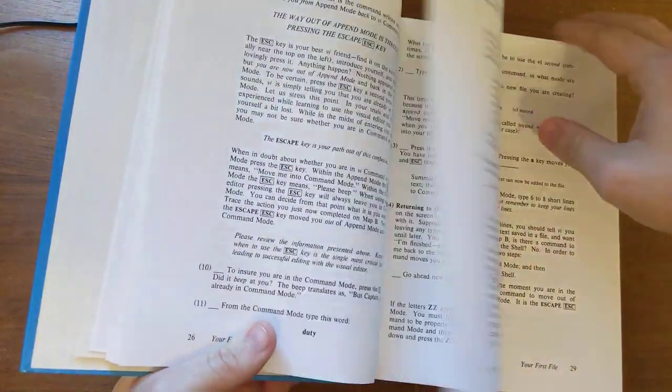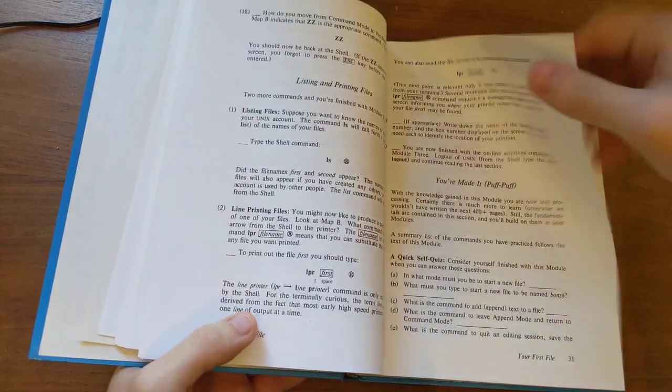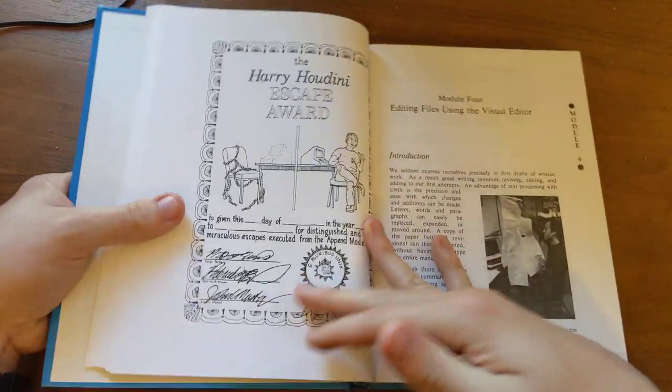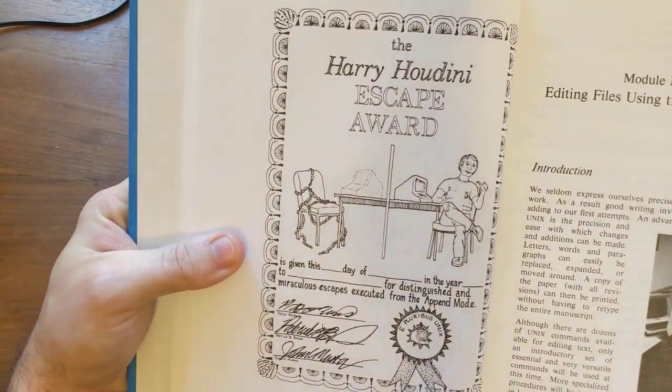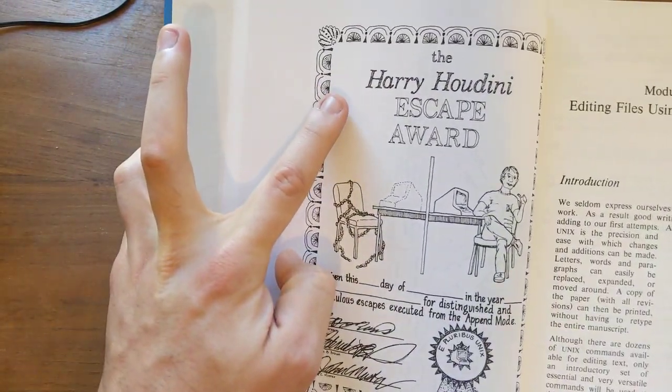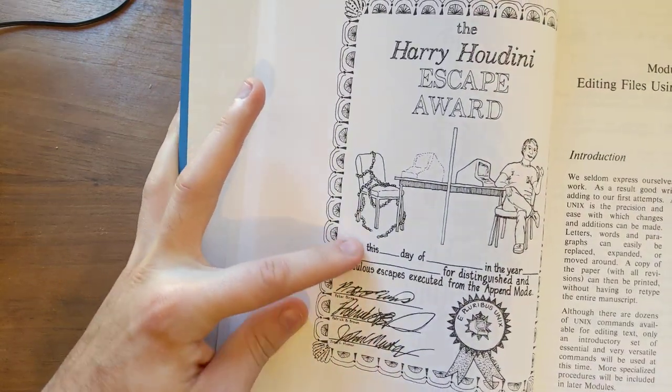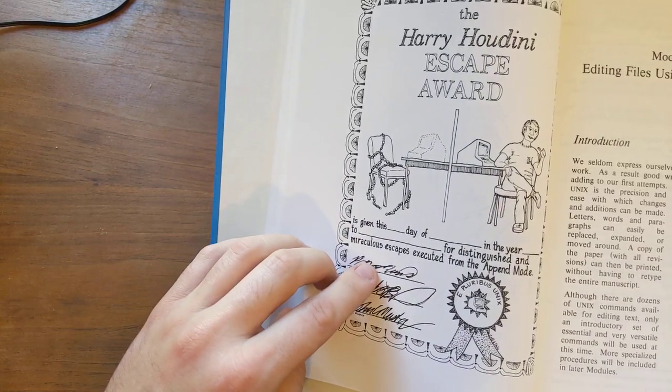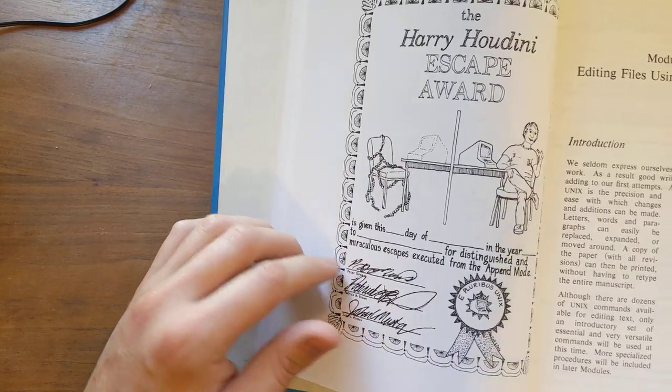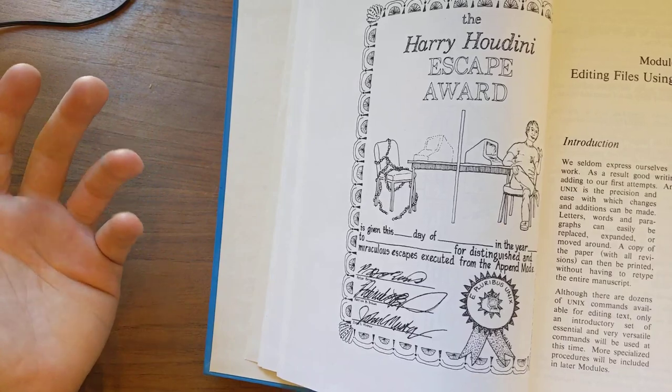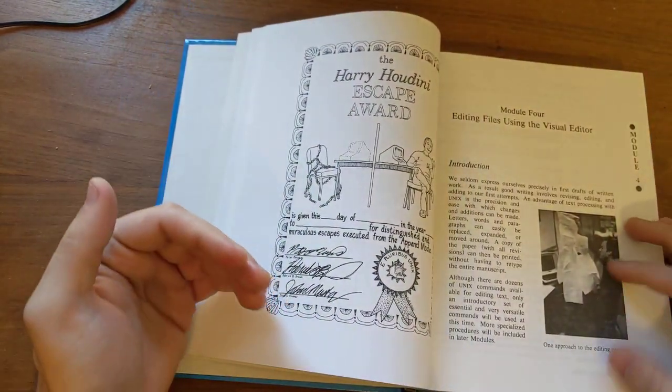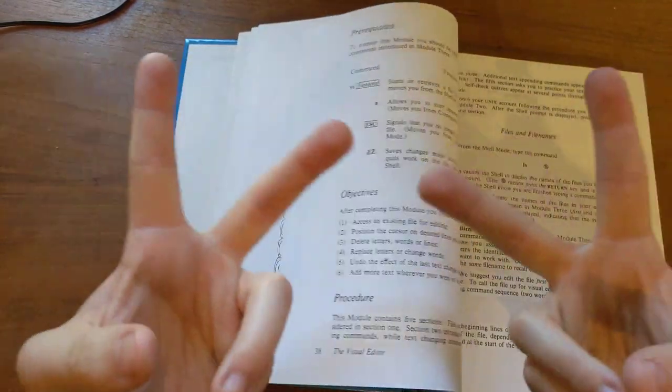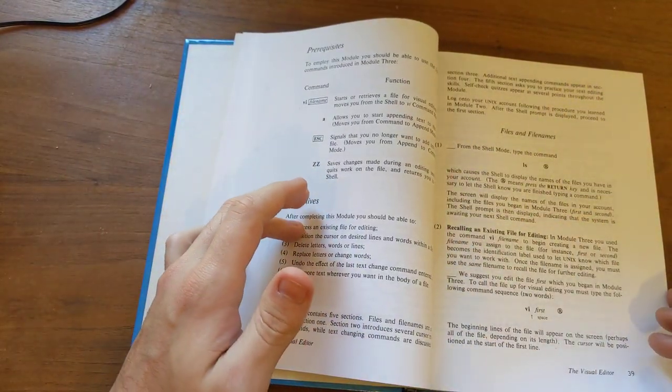Um, anyway, so, they, they go through more basic, I want to, isn't there some little art thing? Oh, yeah, so here is, I know we make fun of people who always talk about how they can't exit Vim, but this is, the Harry Houdini Escape Award is given to blank this day of blank and the year blank to blank for distinguished and miraculous escapes executed from the append mode, more or less, you know, exiting insert mode or exiting Vim. Uh, so, whatever. You know, people, people have always made jokes about how difficult it is to exit Vim.